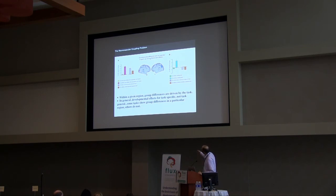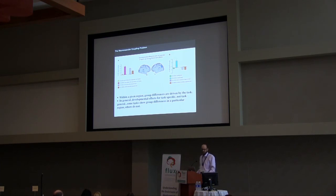And finally, within a given region, what we see for differences between kids and adults is task specific, not task general. For example, this region — kids and adults generating verbs show big activity for the kids, not so much for the adults. Doing a semantic judgment task, the relationship is flipped. Task specific, not task general. It's hard to imagine how a vascular mechanism is going to make that happen.